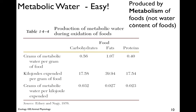Any time an animal eats food, water is produced by metabolism. Food has some free water content, but once food is oxidized you get metabolic water produced from burning carbohydrates, fats, and proteins. You get the most water benefit from fats.